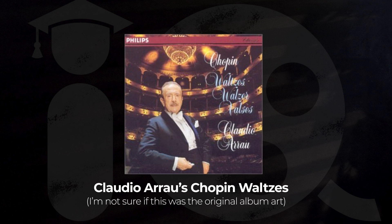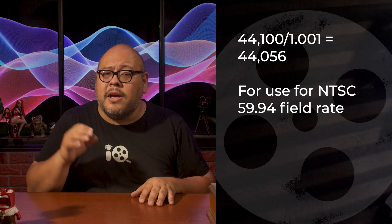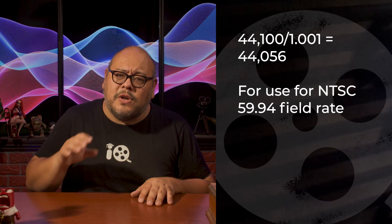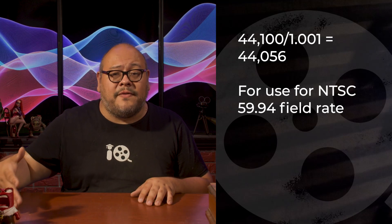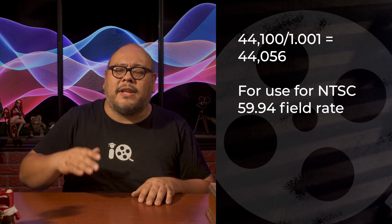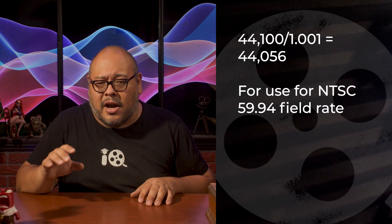From there the digital genie was let out of the bottle and the first commercial CD was produced on August 17, 1982, from a recording of Claudio Arauz performing Chopin waltzes. The first pop album on CD was Billy Joel's 52nd Street, which went on sale in Japan on October 1st, 1982. For completeness, there were a few other sampling rates in those first few years of digital recording — notably 44,056 Hz, which corresponds to the use of the non-integer field rate of 59.94 — but ultimately 44.1 kHz became the standard for CD audio.